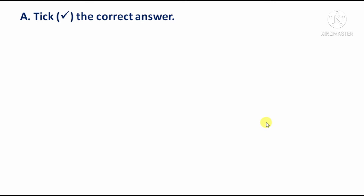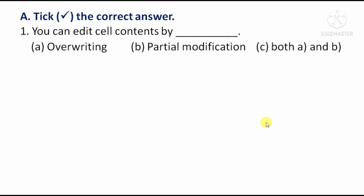Tick the correct answer. First question: You can edit cell contents by — Option A: Overwriting. Option B: Partial modification. Option C: Both A and B. Here are two options — overwriting and partial modification — so the correct answer is Option C, both A and B.